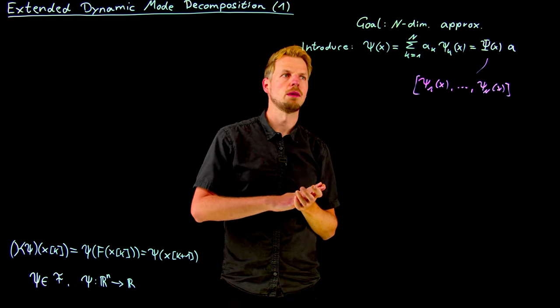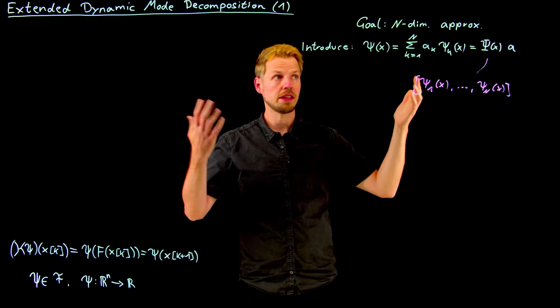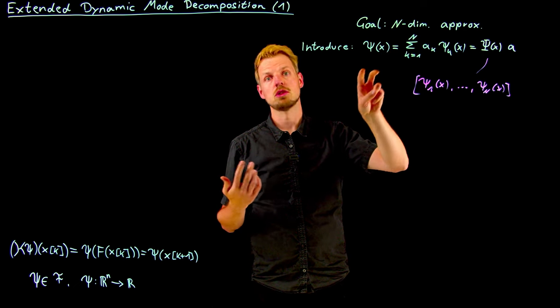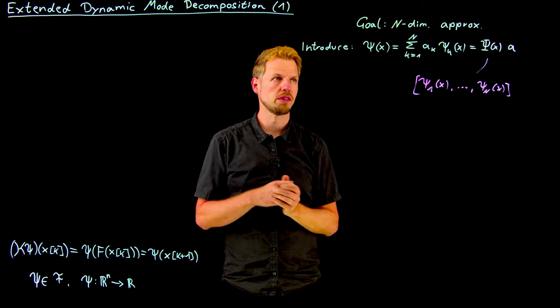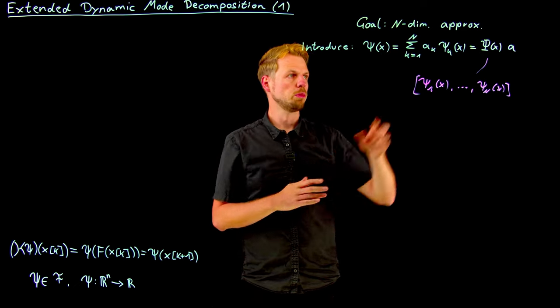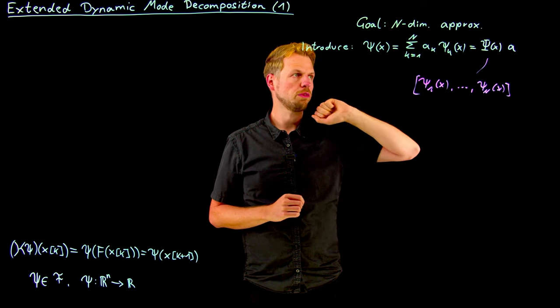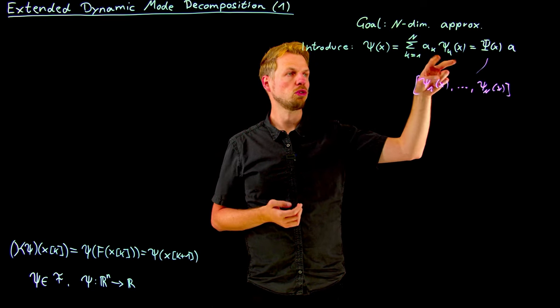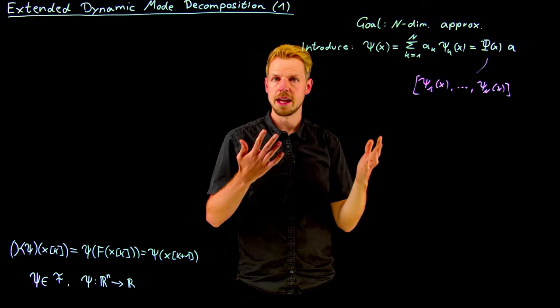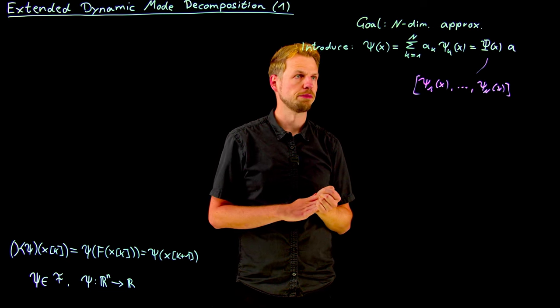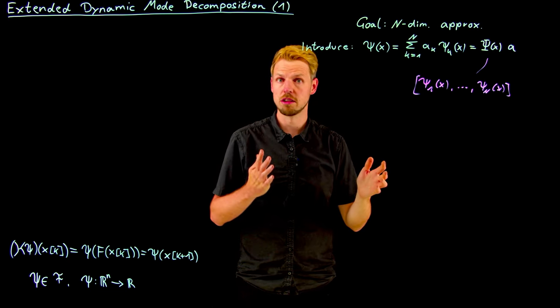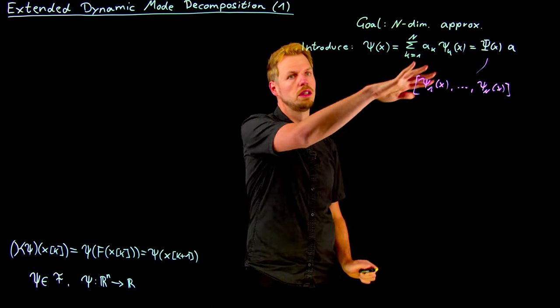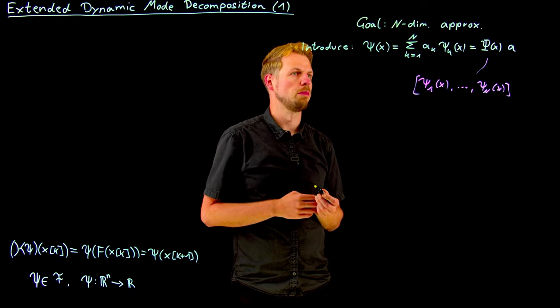Obviously we lose some of the generality because this is now not any function but only functions that can be expressed in this basis. Could be these Hermite polynomials that we have seen before, could be Fourier, mostly sines and cosines, any sort of basis you can think of. Polynomials are also very popular, radial basis functions. This is really limited only by your imagination.